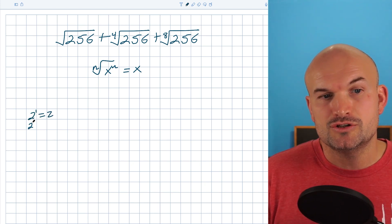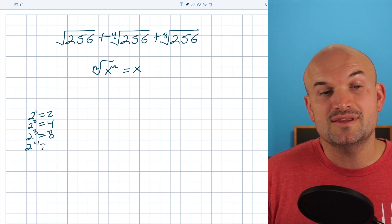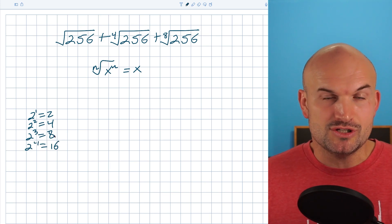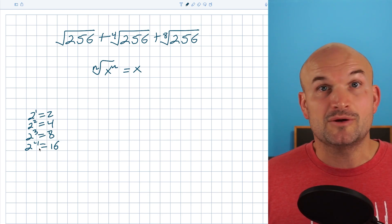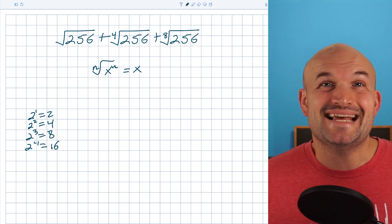So if I have two to the first, that's equal to two, two squared is equal to four, two cubed is equal to eight, two to the fourth is equal to 16. And what you should notice right now is I'm simply just multiplying these. So let's just go ahead and finish these following that exact same pattern so you can start to see how things are going to come together.